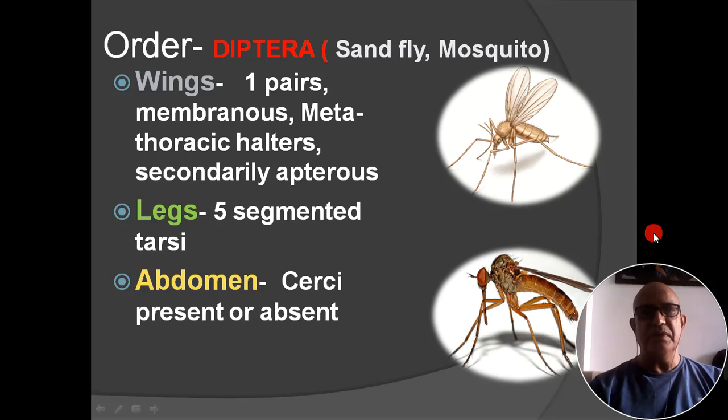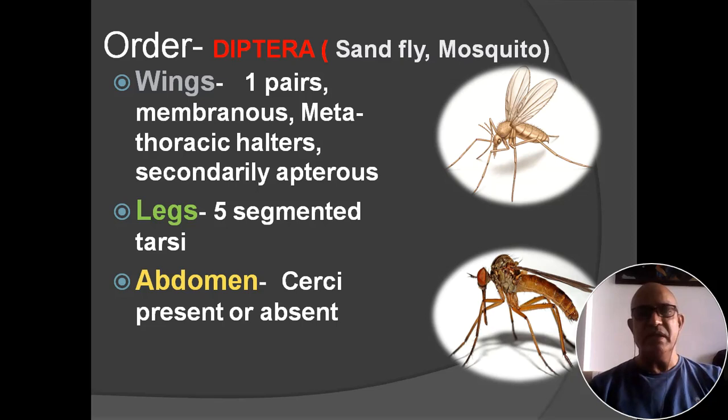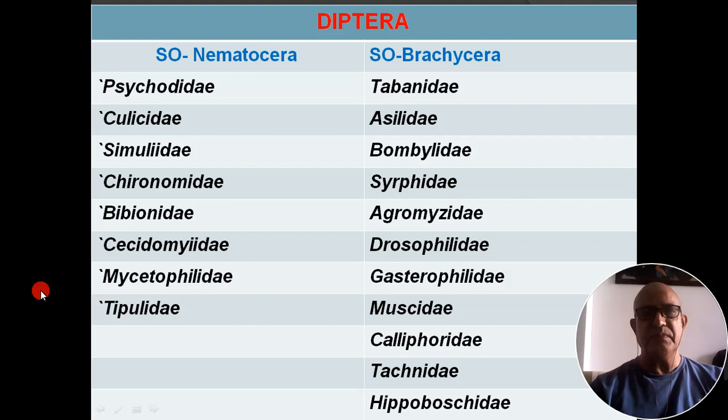Antenna is variable in type. Wings are one pair, membranous; metathorax wings are converted into halteres, so secondarily these insects are considered apterus — primarily they are winged insects but secondarily they are wingless. Tarsi are five-segmented; cerci in abdomen are present or absent.